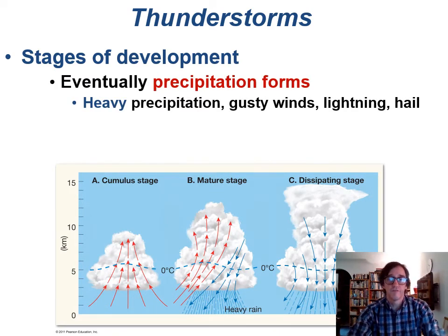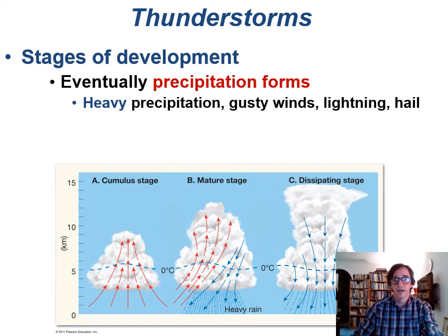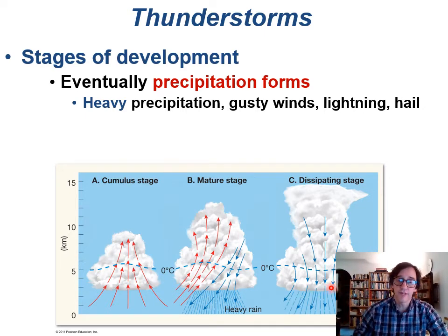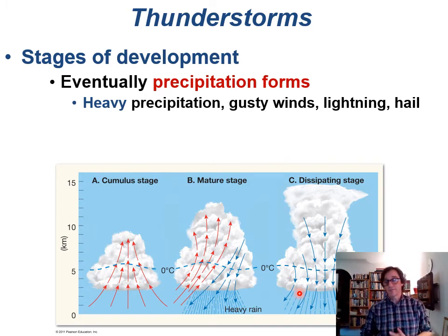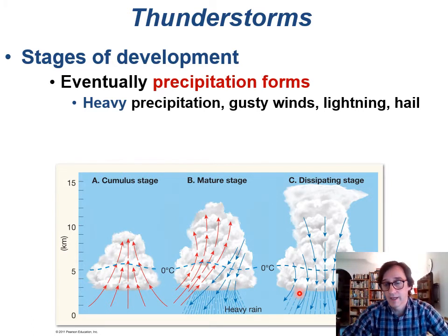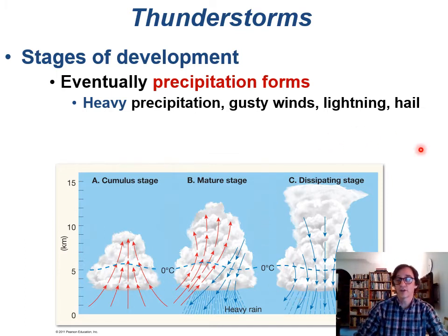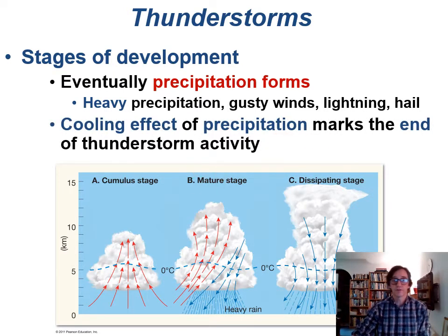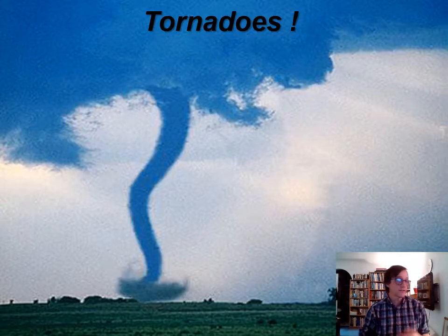Thunderstorm development goes through stages. In the cumulus stage, there are large updrafts of warm rising air. In the mature stage, there's heavy precipitation — lots of condensation and heavy rain. In the dissipating stage, all that cold rain cools the air below the clouds, stopping the rising air and cutting off the moisture supply. The storm essentially cuts itself off by raining, which is why thunderstorms are quite short-lived. Associated features include heavy precipitation, gusty winds, lightning, and hail, and the cooling effects of precipitation mark the end of thunderstorm activity.